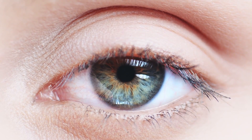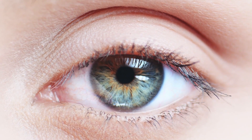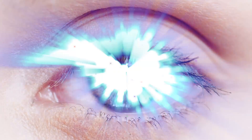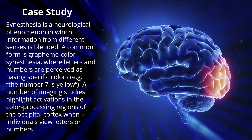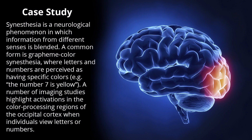Functions associated with the occipital lobe include vision. Case study: Synesthesia is a neurological phenomenon in which information from different senses is blended. A common form is grapheme-color synesthesia, where letters and numbers are perceived as having specific colors.